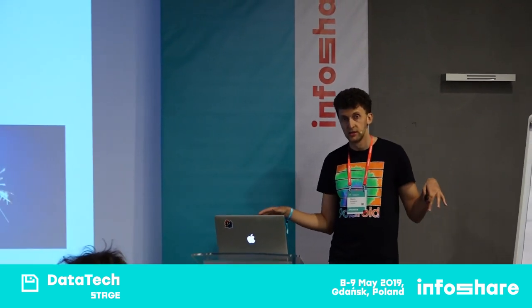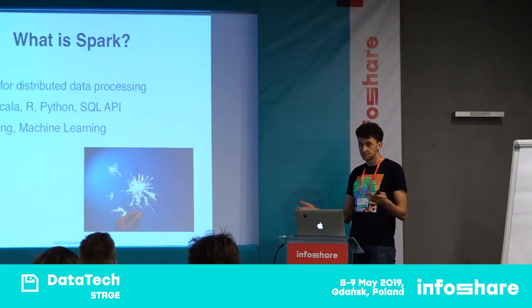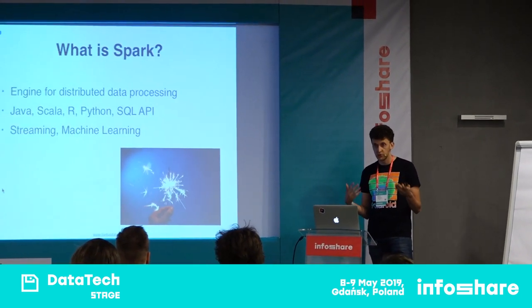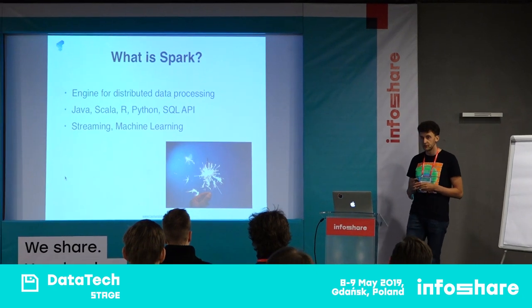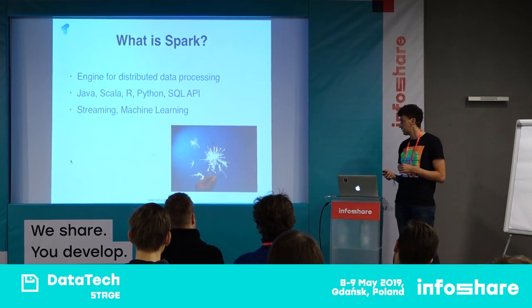Spark is a general engine for distributed data processing, which means you can express your business logic, your pipeline in one of several supported languages, and Spark will take care of distributing the processing. Spark is not a database — it's a processing engine — and you can use data from multiple different sources like Cassandra, HDFS, or cloud storage.